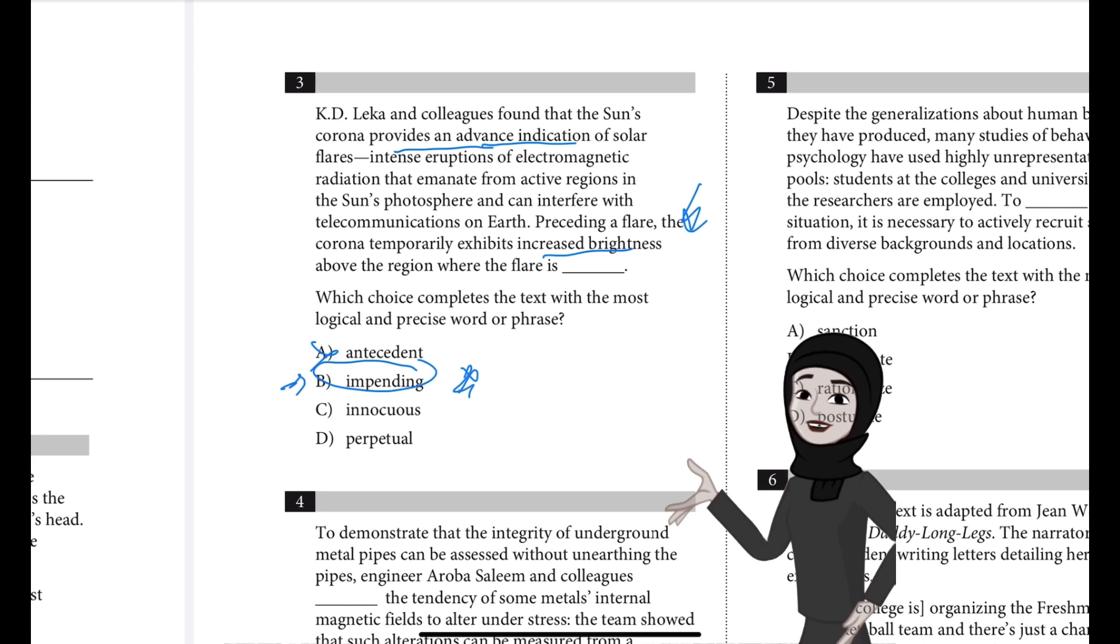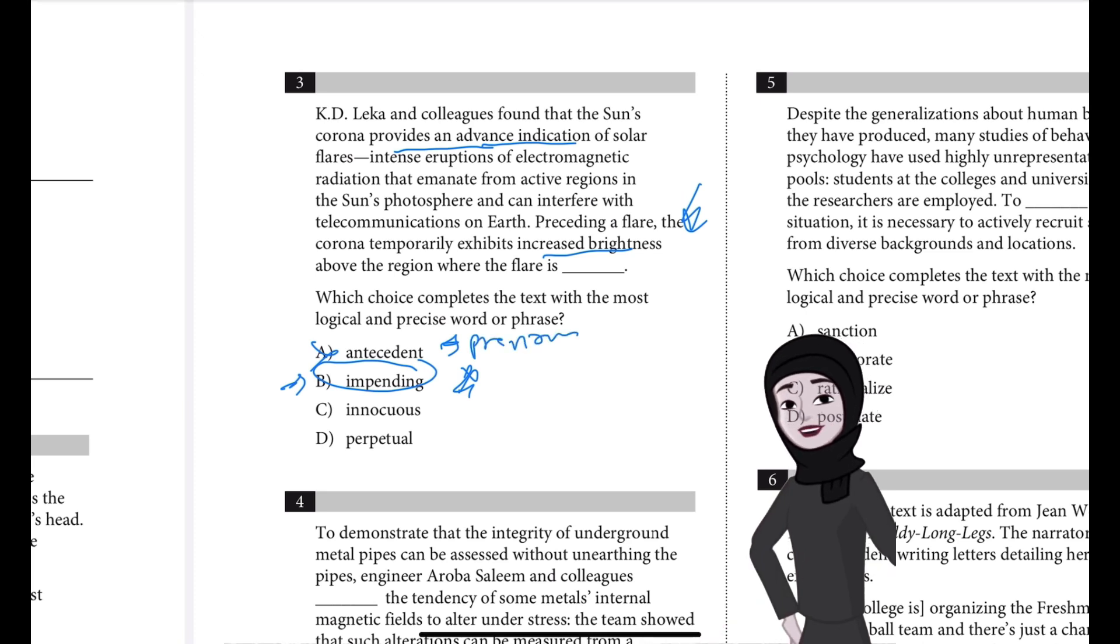So A says antecedent. This is incorrect. The best answer would be one that indicates that the increased brightness of the sun's corona precedes the appearance of the flare. But if the flare were antecedent, which means previous, then the flare would instead precede the appearance of the increased brightness of the corona. So that would be illogical in this case. This is logically inconsistent if you use antecedent.